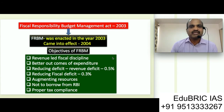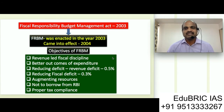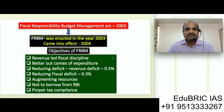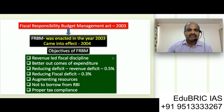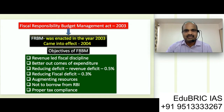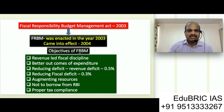Today I have taken a concept called the Fiscal Responsibility and Budget Management Act of 2003. The FRBM Act of 2003 was enacted in 2003 and came into effect in the year 2004. Before I go ahead with the objectives of the FRBM Act of 2003, I really want to tell you why this Act was passed, what was the objective behind it, and what it exactly means for anybody when it comes to the Indian economy.